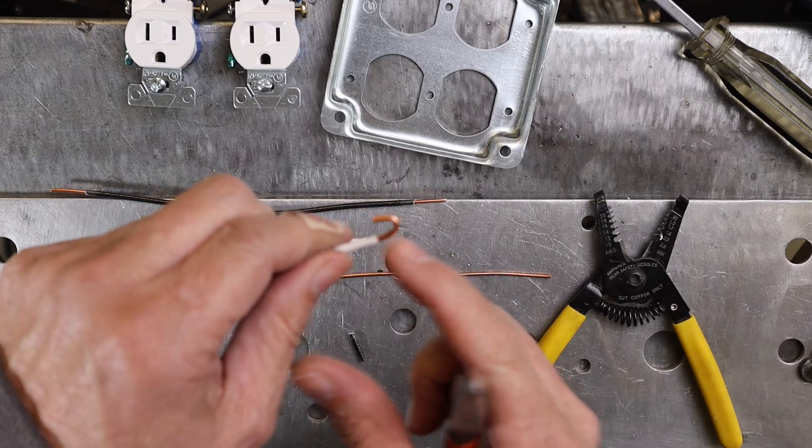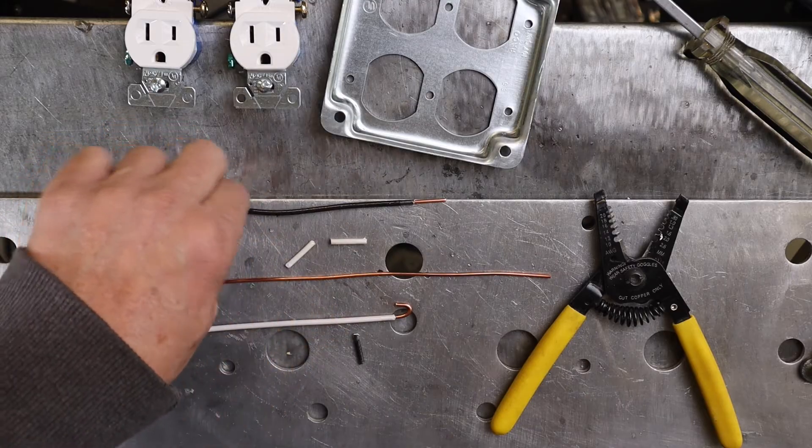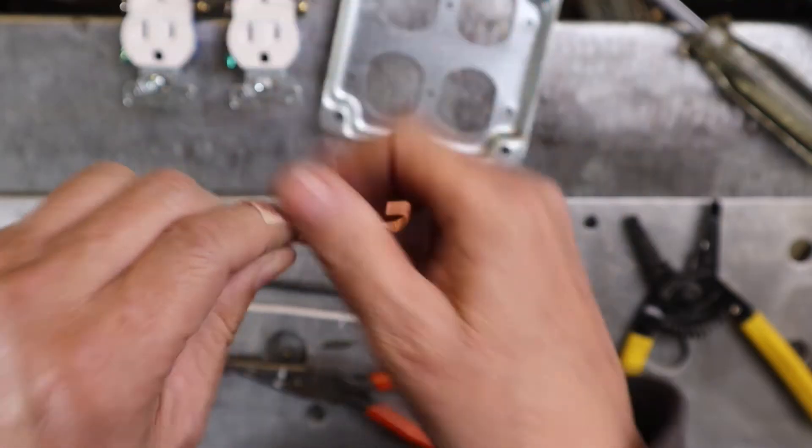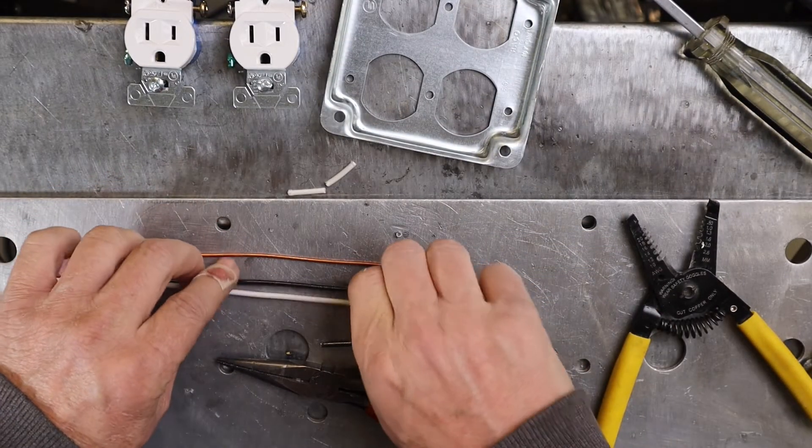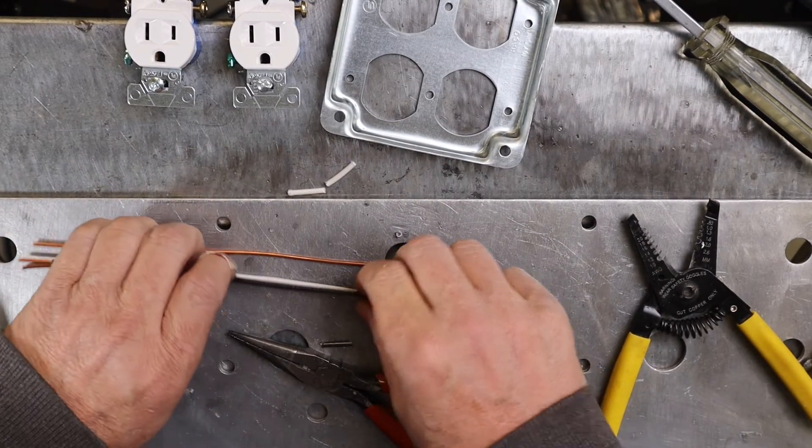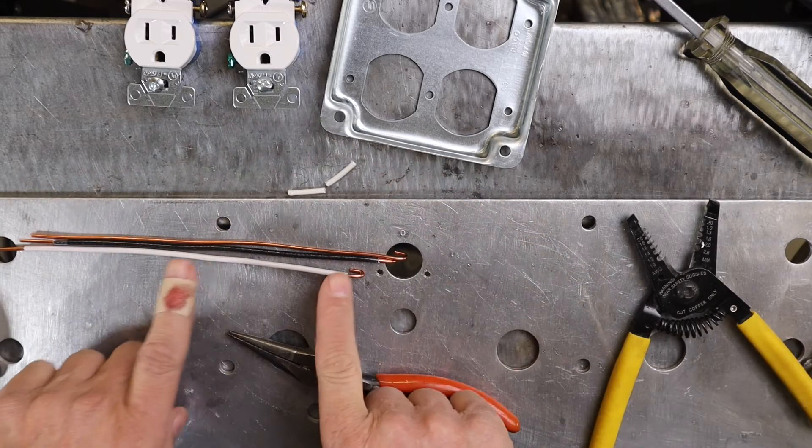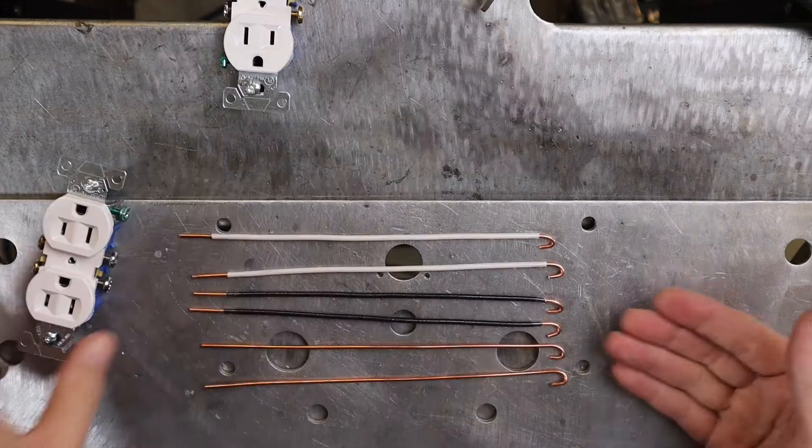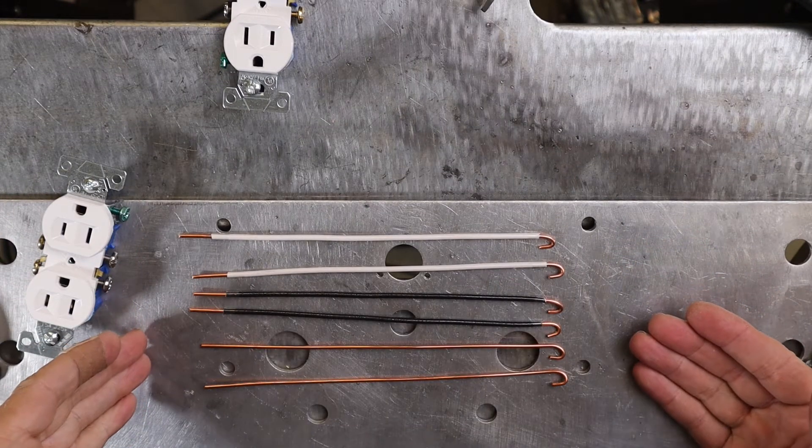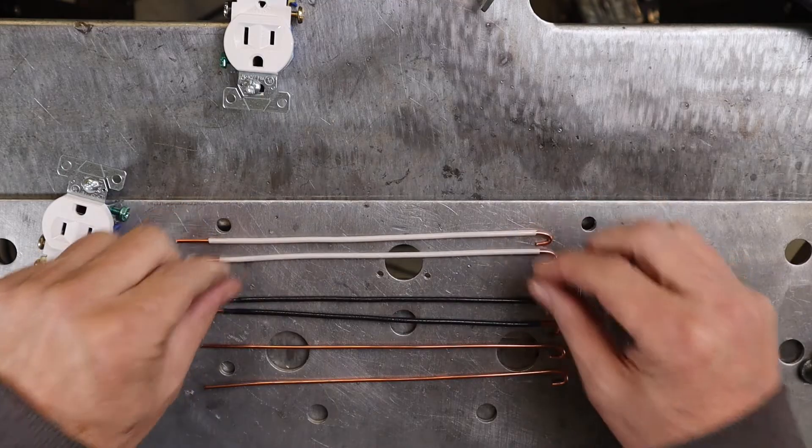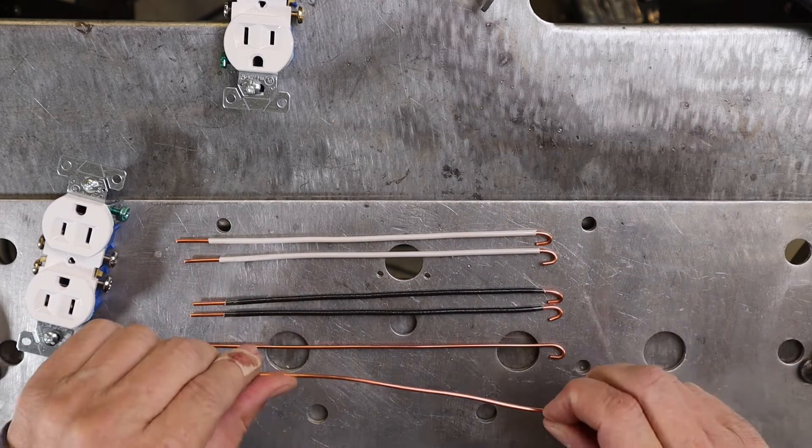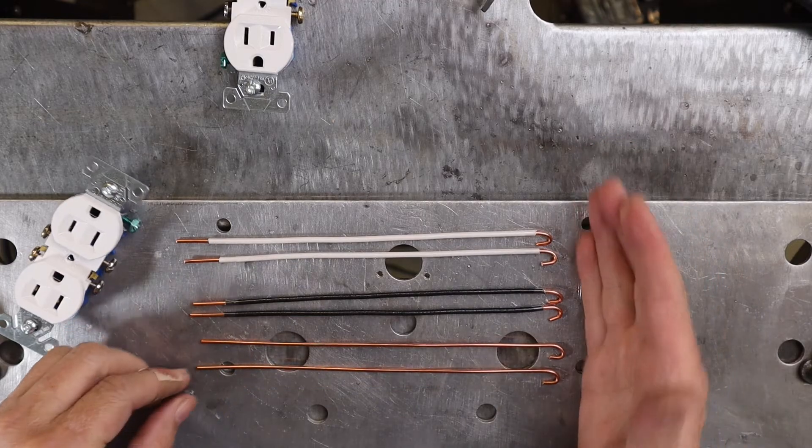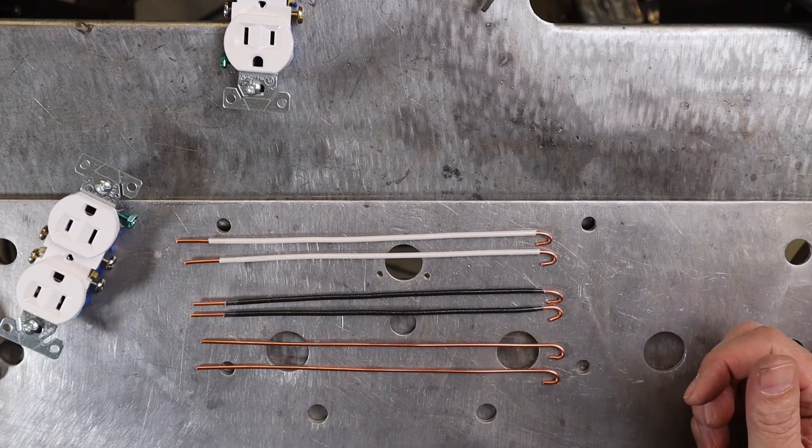Make sure it's out of the way of the loop in the hook, and I actually need two sets of these. I'm going to make another set exactly like that. I've got two sets of pigtails for each wire. The neutrals, the blacks are the hots, the bare wires are the grounds. Hooks on one side, straight stripped on the other side.